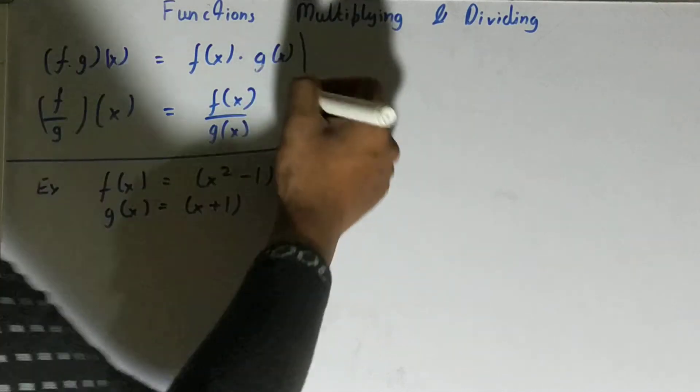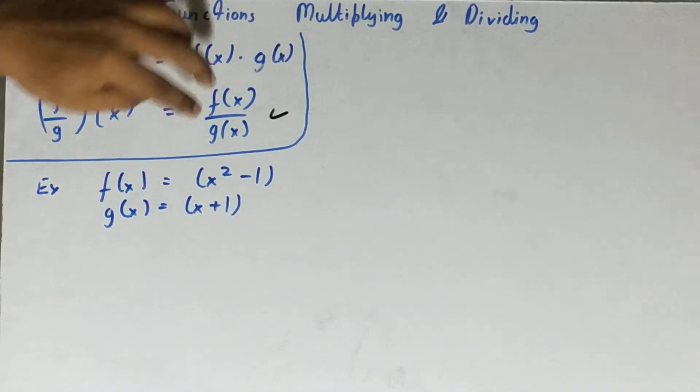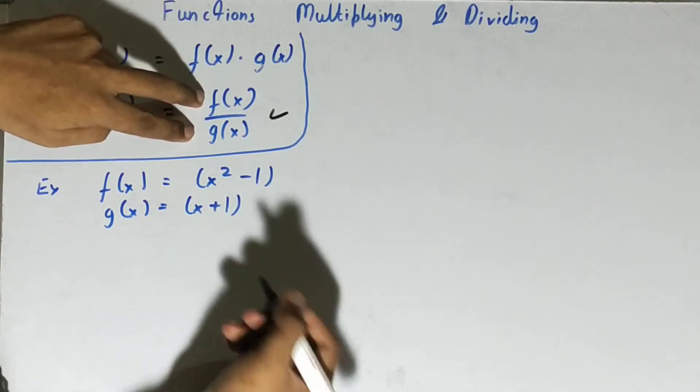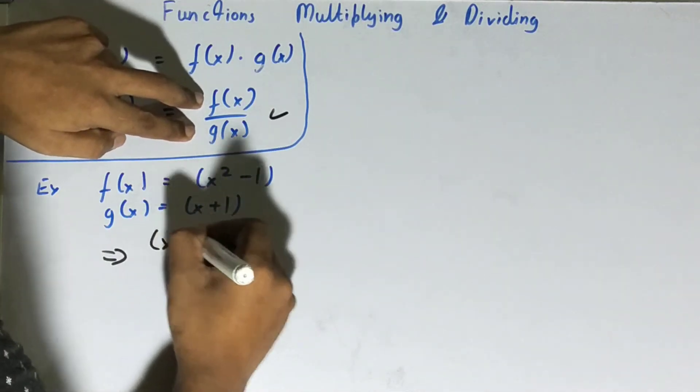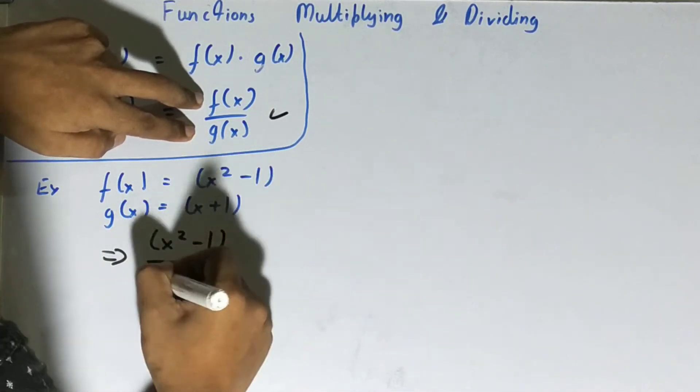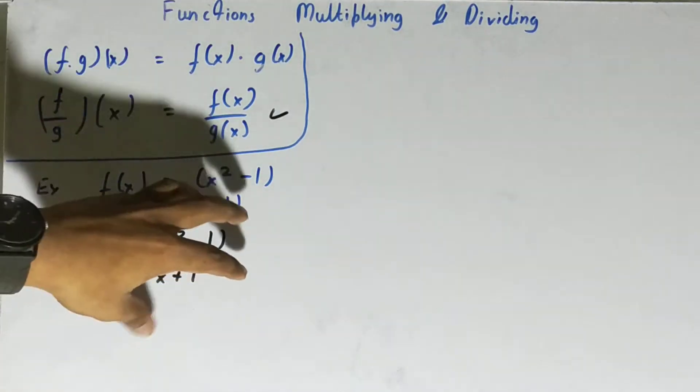So let's just first pick the division one. We have got two functions and we need to divide like this. Then we can actually write them in a fraction form. So let's write them up first. So this will be x squared minus one, and this will be x plus one.